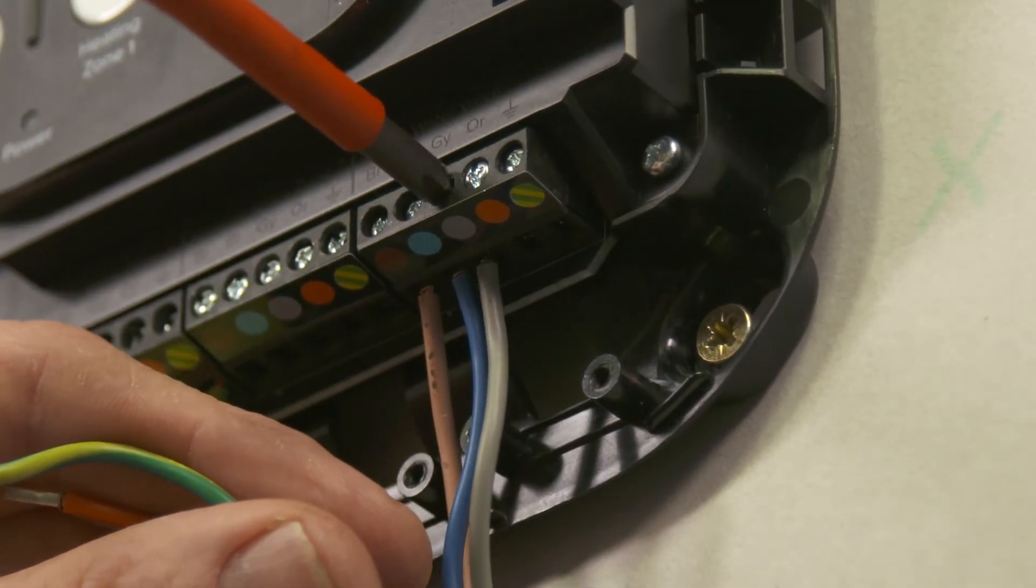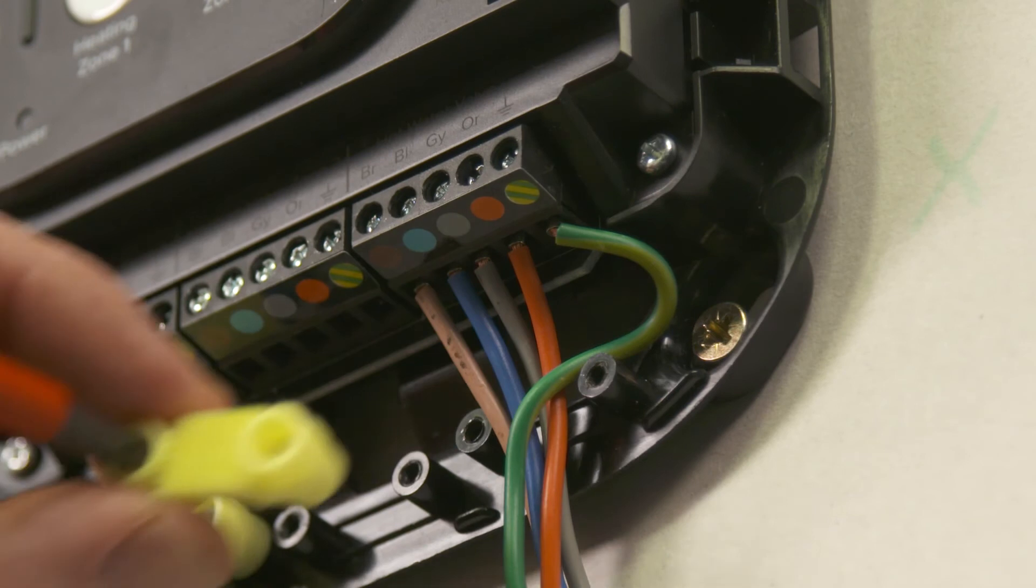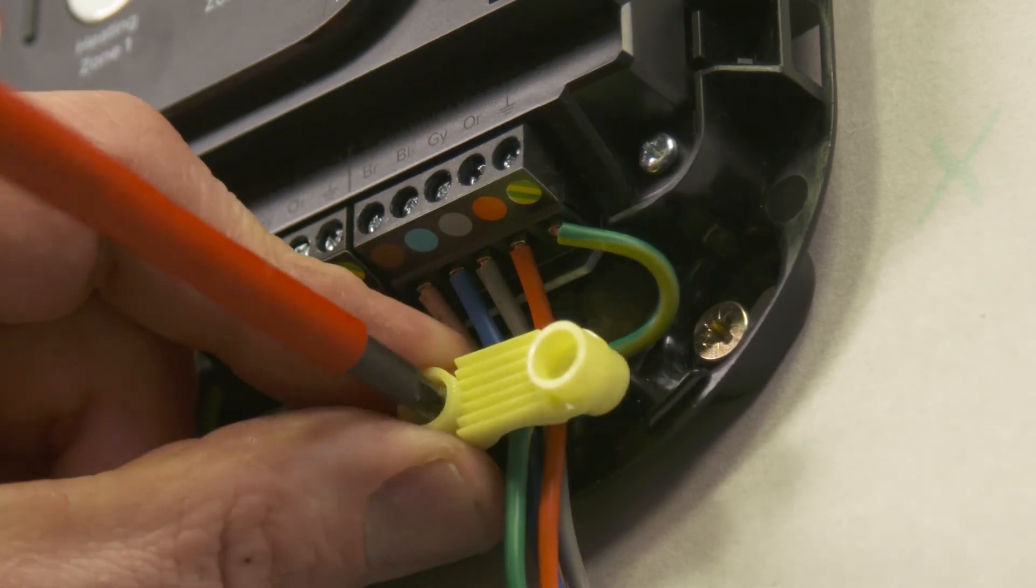Wire the zone valve for hot water, ensuring the outer sheathing is secured with the wiring clamps.